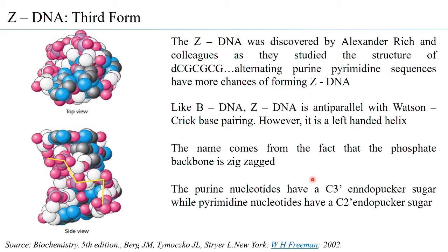The third form is Z-DNA, discovered by Alexander Rich and colleagues while studying oligonucleotides made of alternating pyrimidine-purine sequences. These sequences formed a zigzag structure, giving Z-DNA its name. Like B-DNA and A-DNA, Z-DNA is anti-parallel with Watson-Crick base pairing. However, one major difference is that Z-DNA is not a right-handed helix — it is, in fact, a left-handed helix.